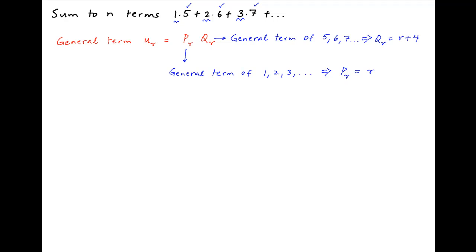Therefore, U_R, which is the product of P_R and Q_R, is equal to R times R plus 4, which is equal to R square plus 4R.